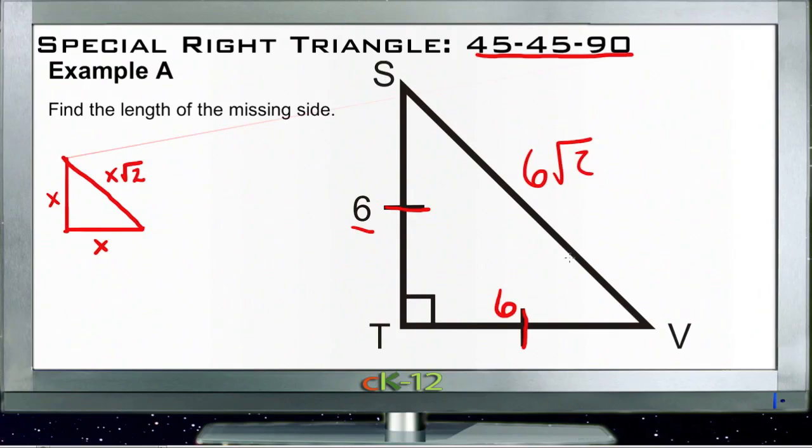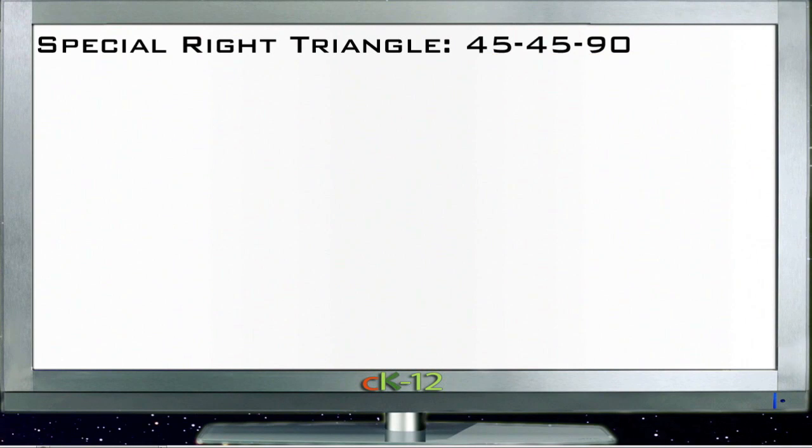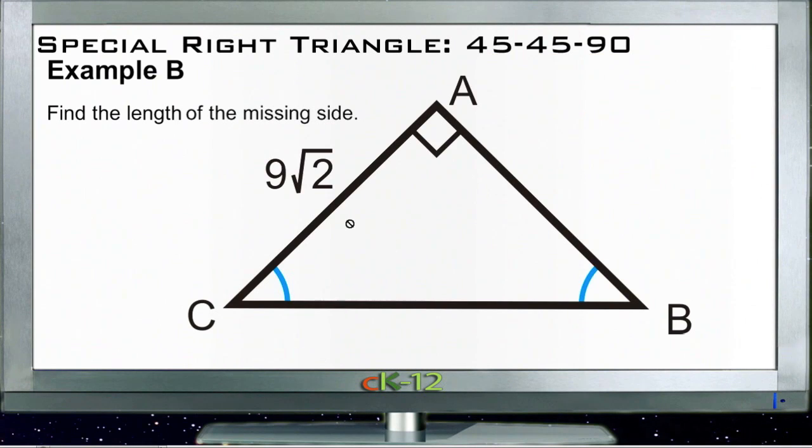Let's take a look at Example B. We have 9 square roots of 2 is one of our sides right here. So that means the other side, since these two angles here are the same, this is an isosceles right triangle. That means that this side over here is the same as the other one, so it's 9 roots of 2. And the missing side down here would be 9 roots of 2 times roots of 2.